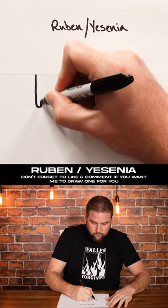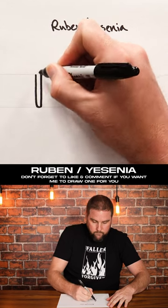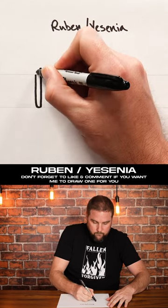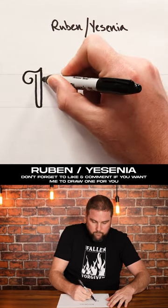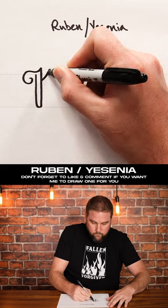This guy wants to see Reuben, so it says Yesenia upside down. Sure, I'll draw it for you.